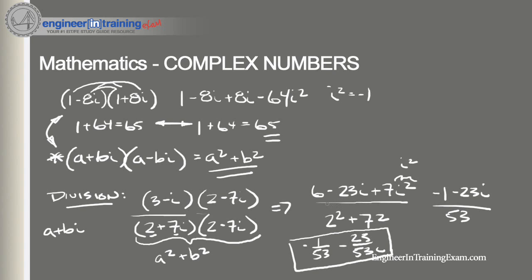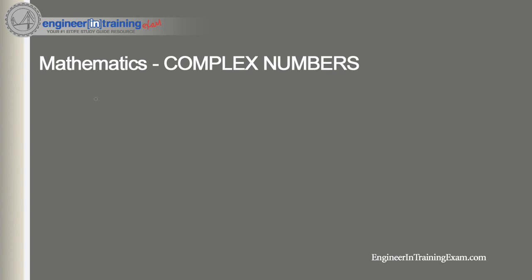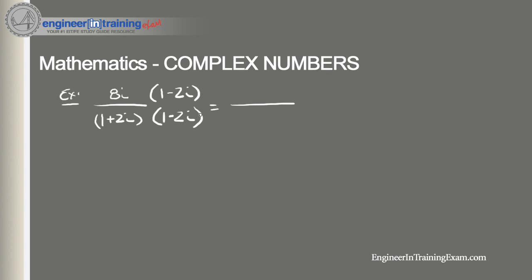Let's reinforce this with another division problem: 8i divided by (1 plus 2i). We multiply by the conjugate (1 minus 2i), giving us (8i minus 16i squared) over (1 squared plus 2 squared). Substituting i squared equals negative 1 and simplifying, we get 16/5 plus 8/5 i.